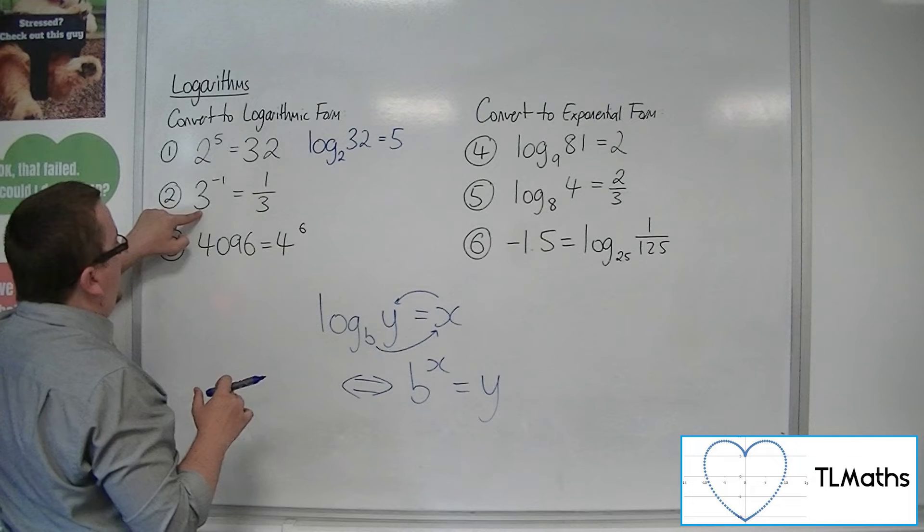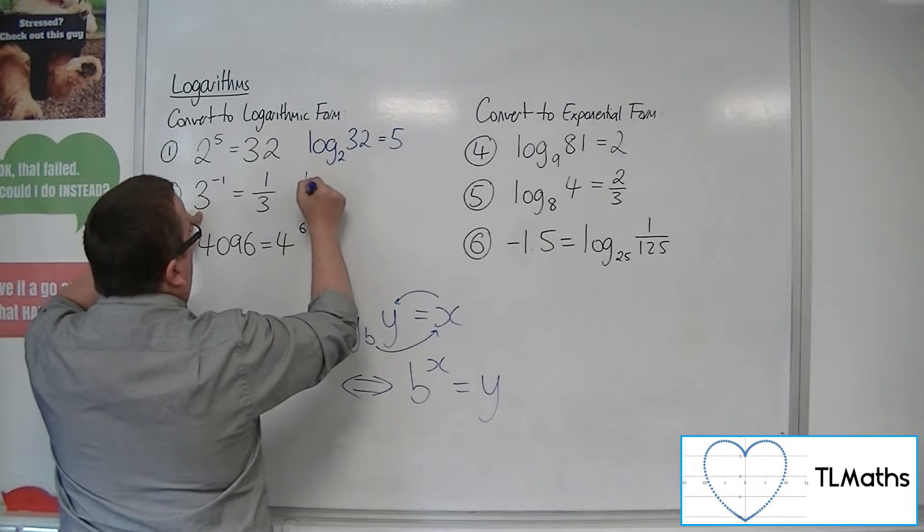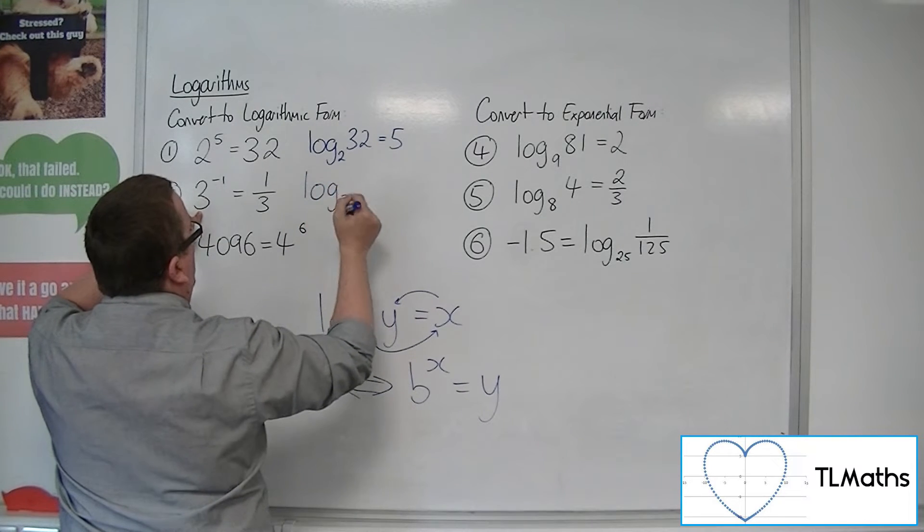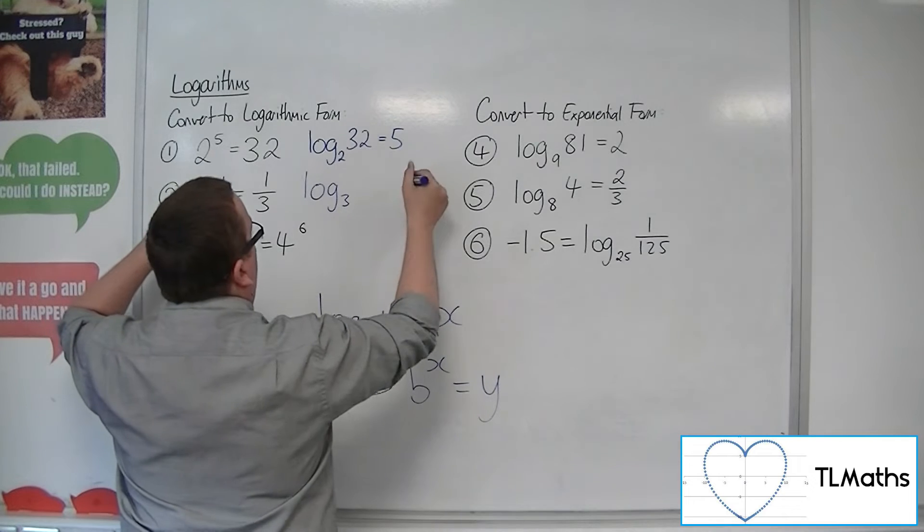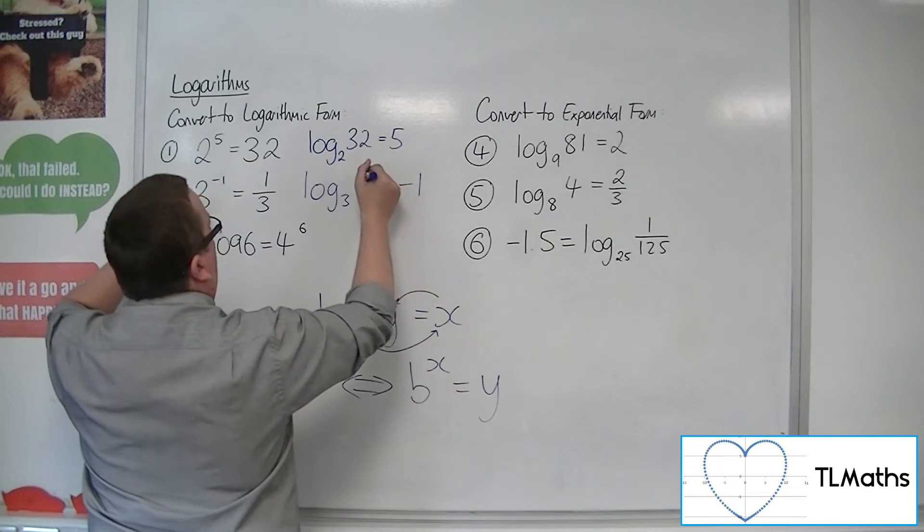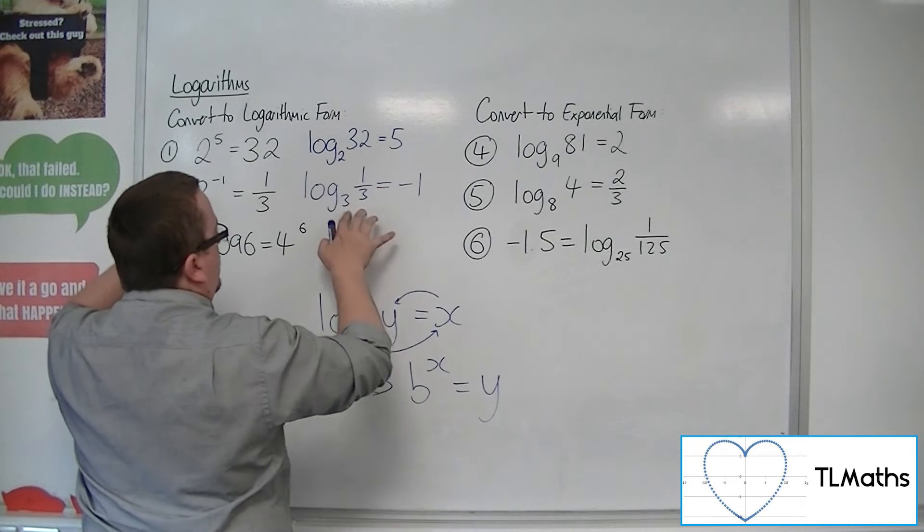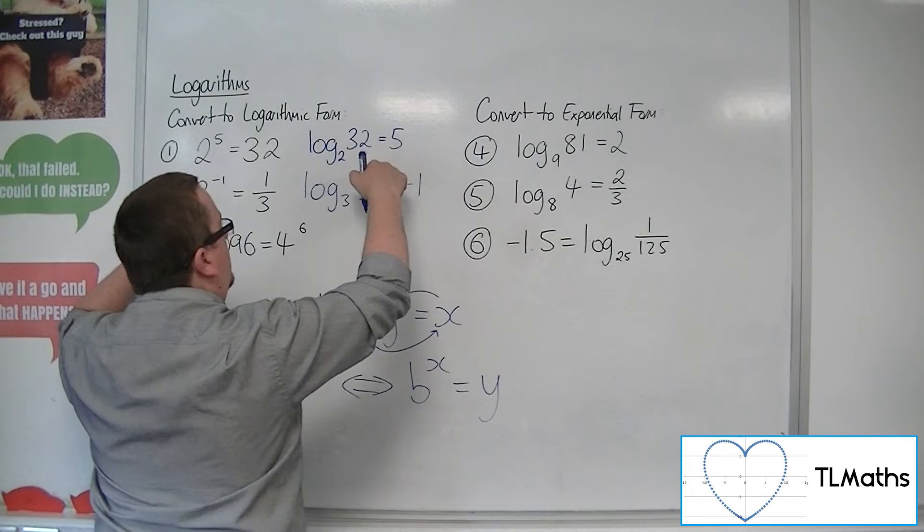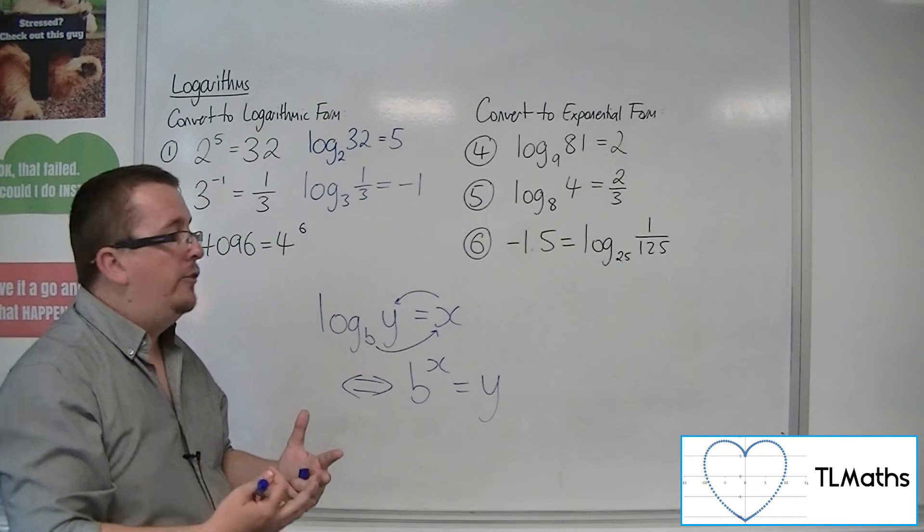So 3 to the minus 1 equals a third. The base number is 3. So log base 3... 3 to the minus 1 is equal to 1 third. So log base 3 of a third is equal to minus 1.